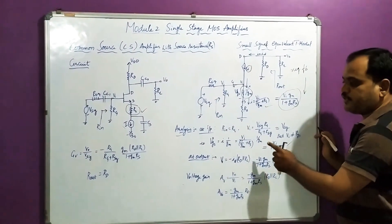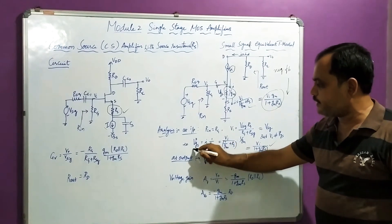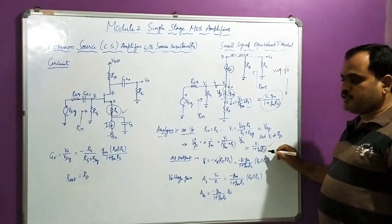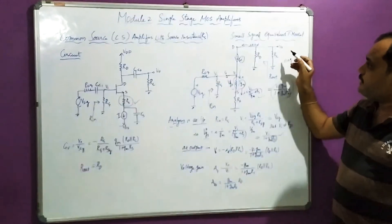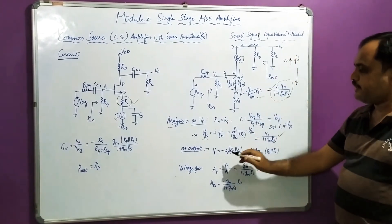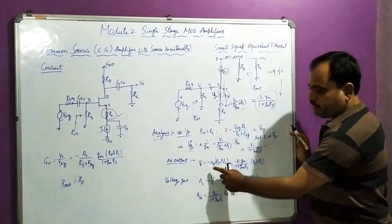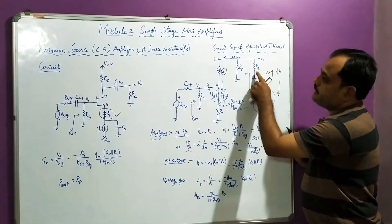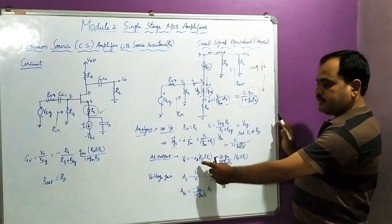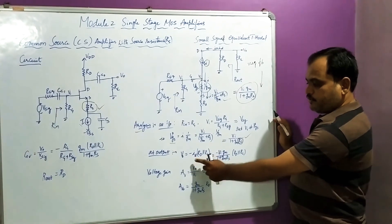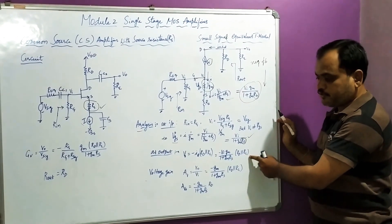This helps the circuit maintain the small signal as small as possible — a very important benefit of using RS. At the output side, V0 is equal to minus Id times (Rd parallel Rl), negative because of the negative feedback path. Neglecting channel length modulation, Id is Vi·Gm divided by (1 + Gm·RS), so V0 = minus Vi·Gm/(1 + Gm·RS) times (Rd parallel Rl).